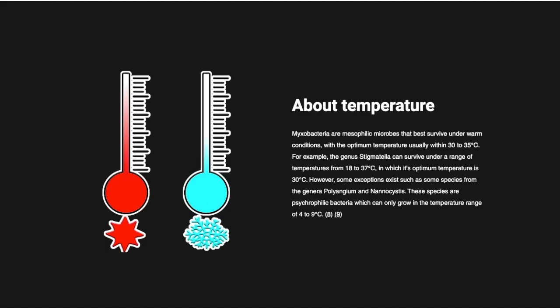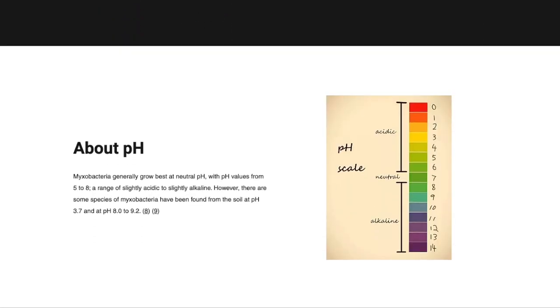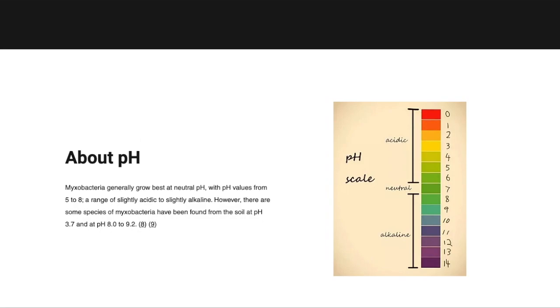There are certain species that can survive lower temperatures, such as the genus Stigmatella, which can withstand temperatures between 18 to 37 degrees Celsius. Myxobacteria grow in soils with a pH range of 5 to 8, with decaying organic substances, for example, the dung of herbivores.